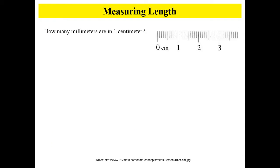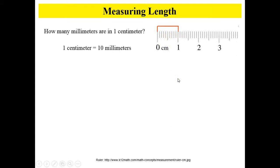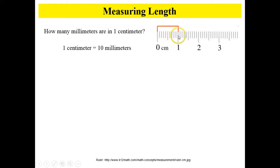How many millimeters are in one centimeter? If you look at the image of the ruler here, one centimeter goes from zero to one. A millimeter is represented by the lines in between, so you can see that 1 centimeter equals 10 millimeters. We can count them: 1, 2, 3, 4, 5 — notice the 5 mark is a little longer, which is helpful when you're measuring — 6, 7, 8, 9, 10.